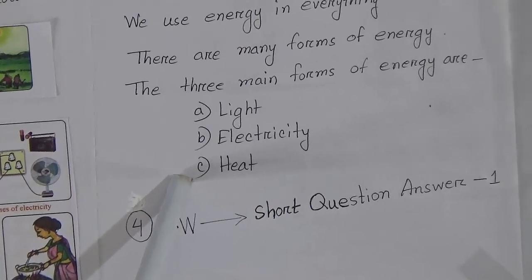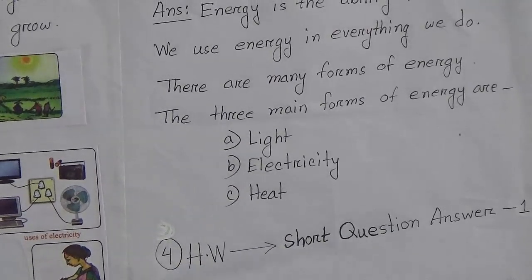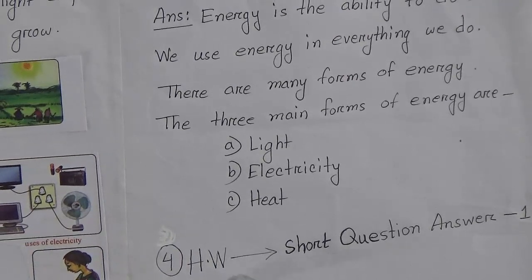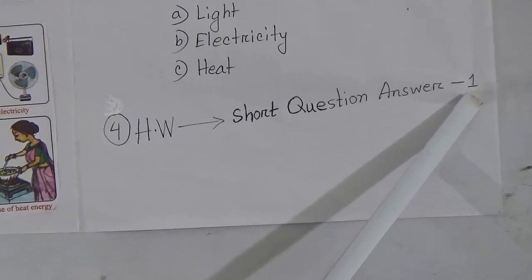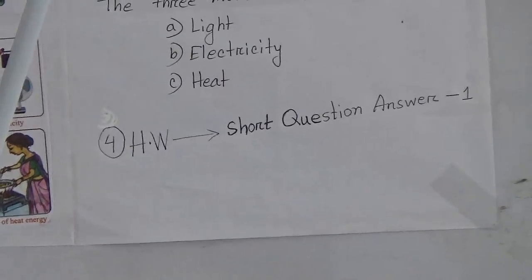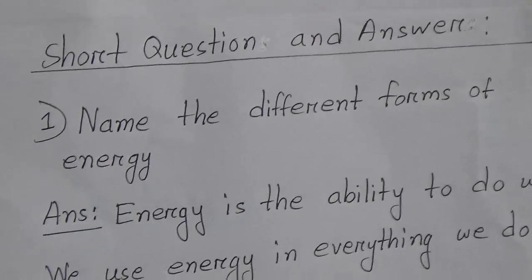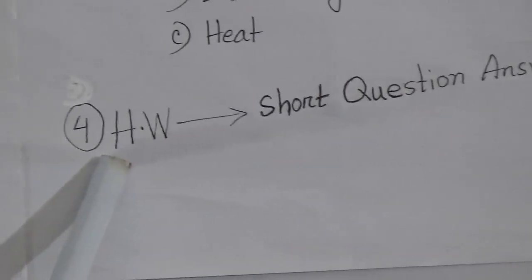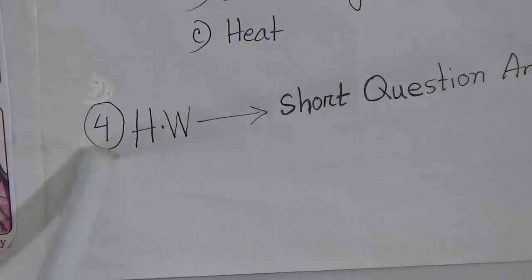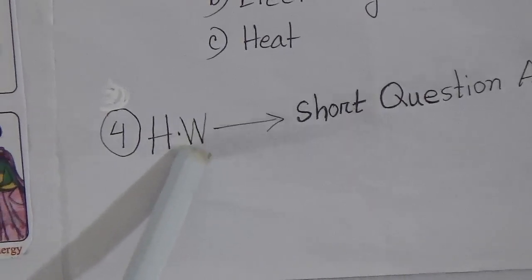Students, you have to do your seatwork. Your SW will be short question and answer number one — that means this short question. This is your fourth number SW. When you do your SW, you have to write 'Number 4 SW' at the top of your copy.